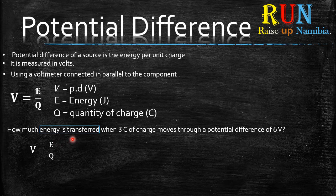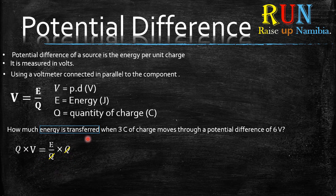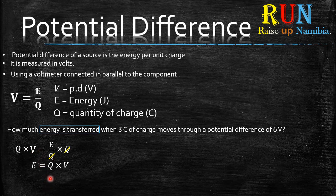If you don't know how to make a letter the subject of the formula, check the link in the description below. Some books also use a triangle where you cover one quantity to get the formula for another. Since we are looking for E, we multiply both sides by Q — on the right-hand side the Q cancels out, giving us E equals Q multiplied by V.